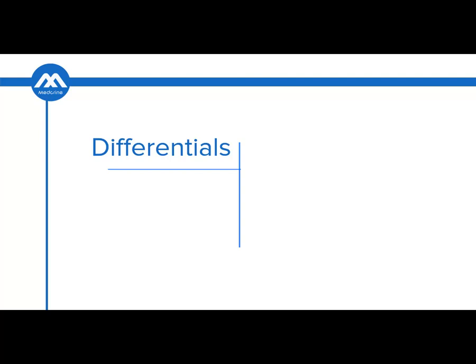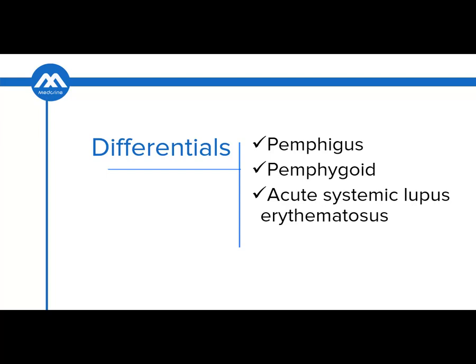The differential diagnoses you may consider when a patient presents with similar features to Steven Johnson syndrome are pemphigus, pemphigoid, acute systemic lupus erythematosus, and Sweet syndrome.